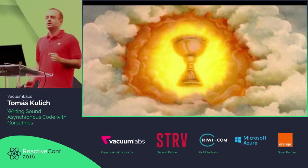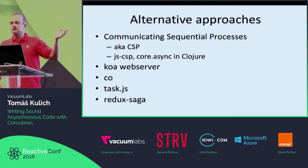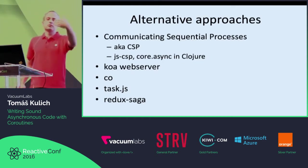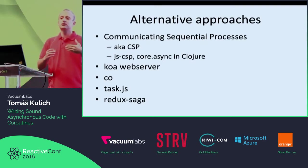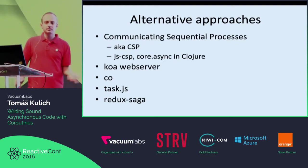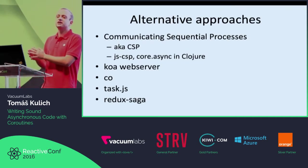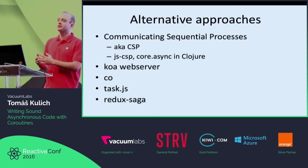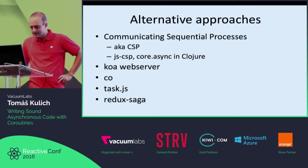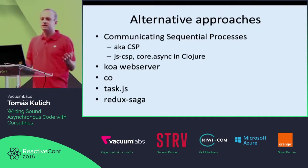But actually, not everyone likes promises. These are some projects from the JavaScript world — not end-user projects, but libraries which allow end-users to write asynchronous code. And none of these uses promises; usually they use generators with some home-built stuff. Rich Hickey, when he introduced CSP core async into Clojure, said roughly that async/await is a really nice sugar, but we should put it on a better cake — by which he meant promises.